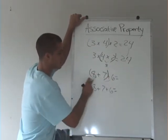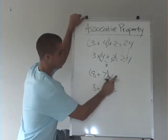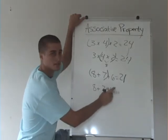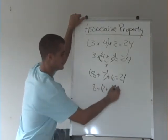We can associate the 8 and the 7 first and get 15 plus 6 is 21, or we can associate the 7 and the 6 first and get 13 plus 8 is 21.